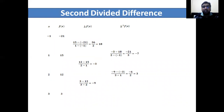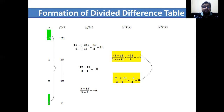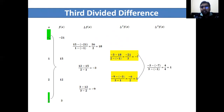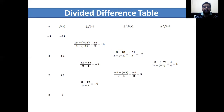Now we move to the third divided difference table. We take the difference of the second divided differences, skipping the next two values, using x3 minus x0. The result is 1. So we have built the complete divided difference table by repeatedly taking differences and dividing — that is why it is called a divided difference table. It is very easy.